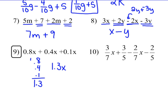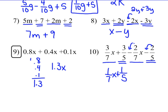Number 10: 3 sevenths x minus 2 sevenths x — those are like terms with a common denominator. 3 sevenths x minus 2 sevenths x gives 1 seventh x. Then 3 fifths minus 2 fifths — yes, that is minus 2 fifths — gives 1 fifth. So my binomial answer is 1 seventh x plus 1 fifth.